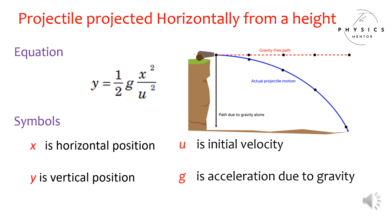The equation of the trajectory is y equals half g x squared divided by u squared. Symbols: x is horizontal position, y is vertical position, u is initial velocity, g is acceleration due to gravity.